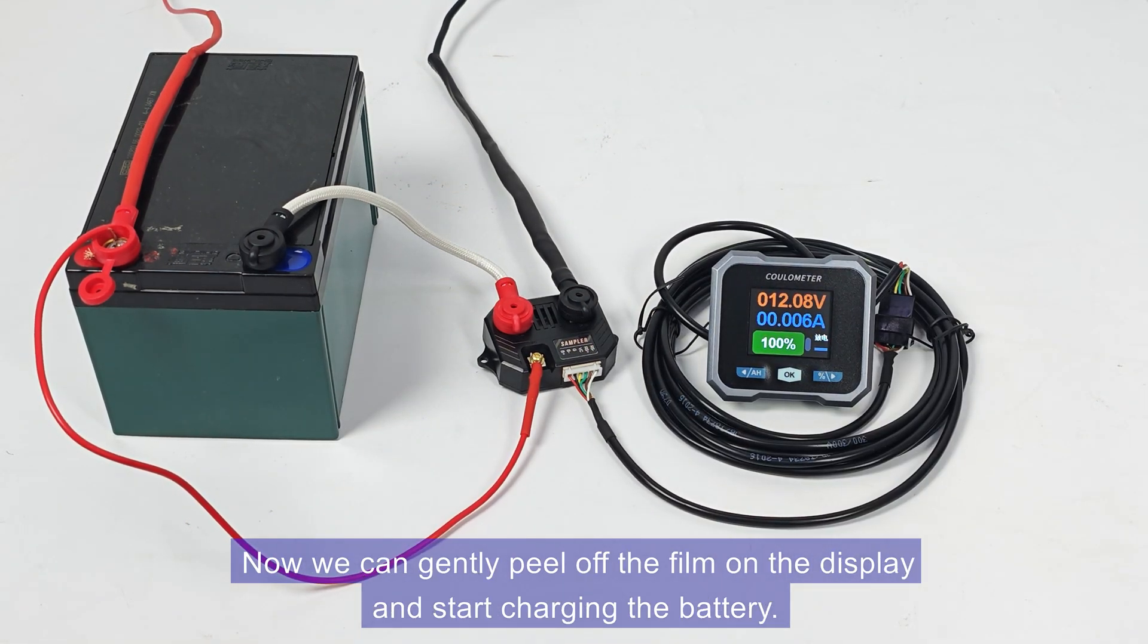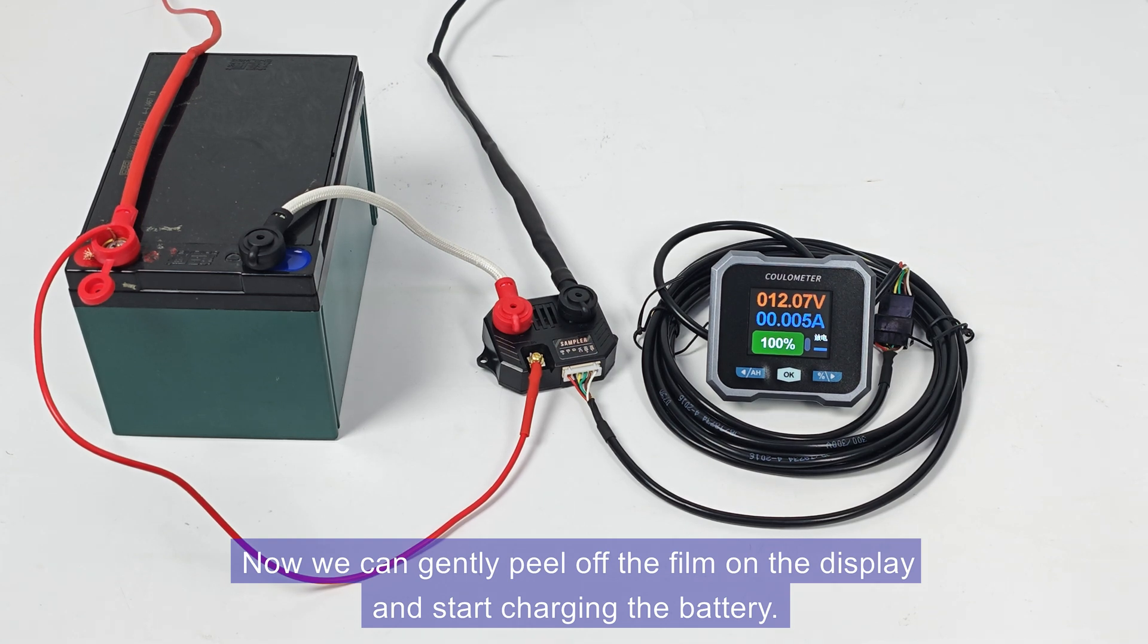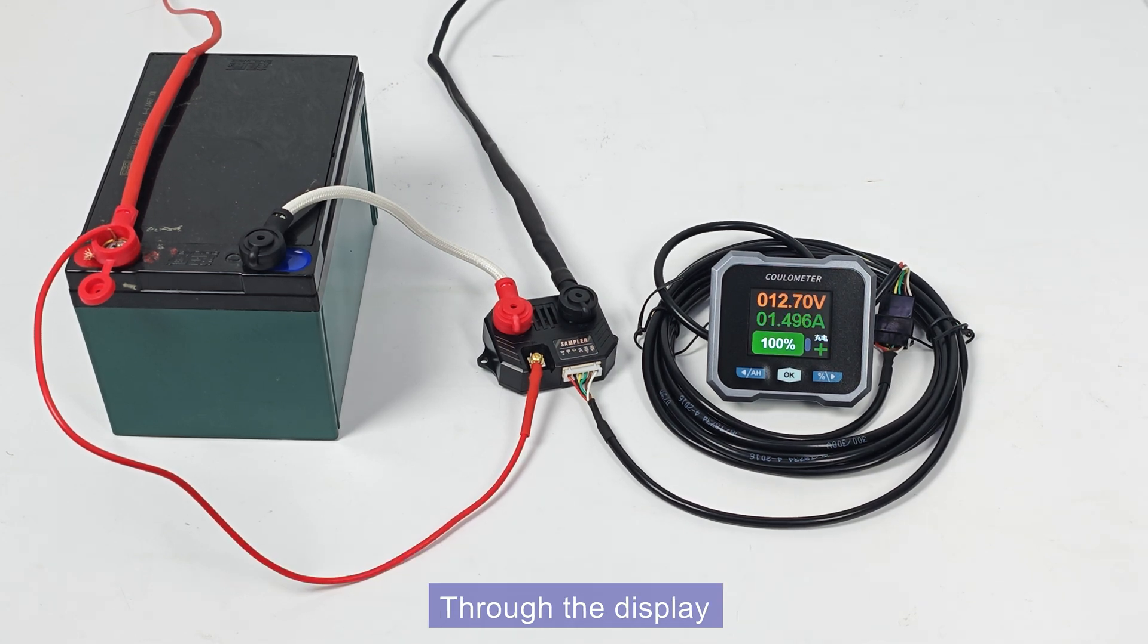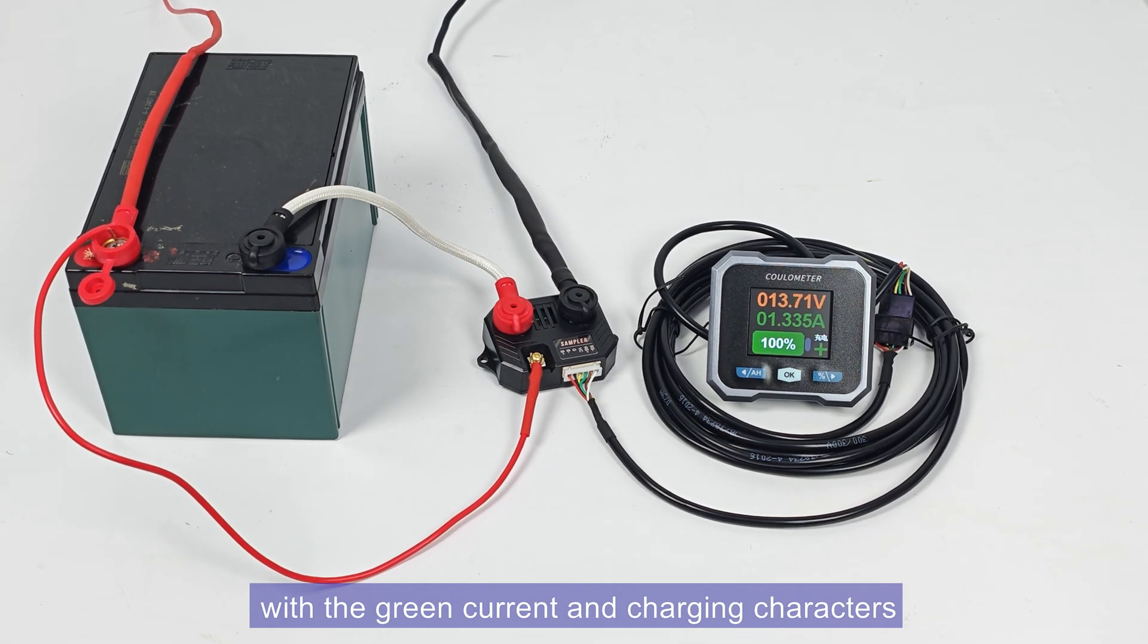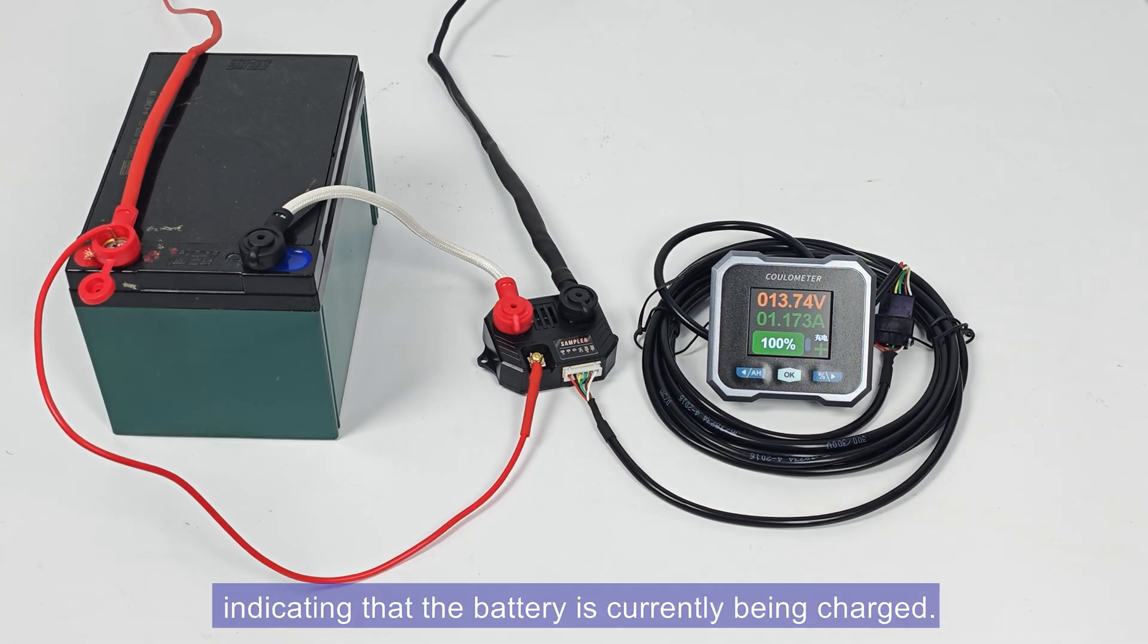Now, we can gently peel off the film on the display and start charging the battery. Through the display, we can clearly see the charging parameters, with the green current and charging characters, indicating that the battery is currently being charged.